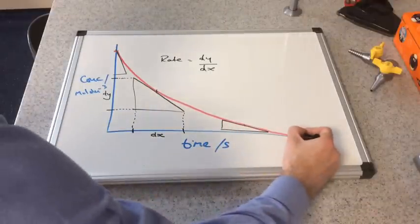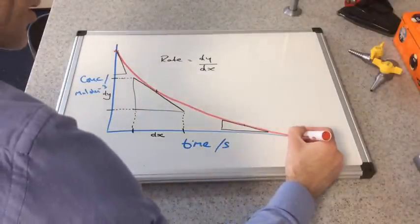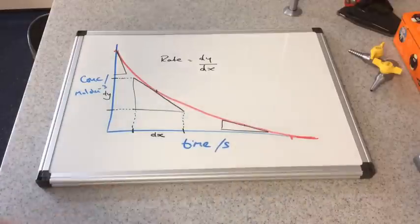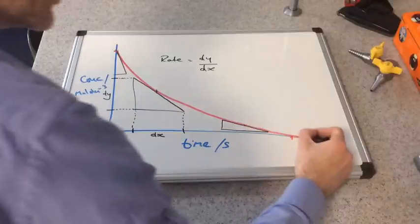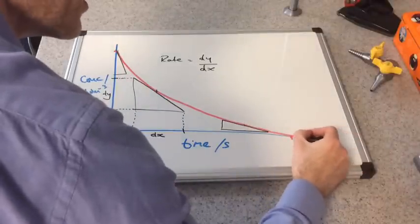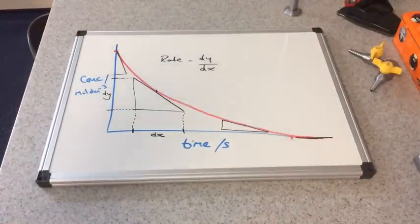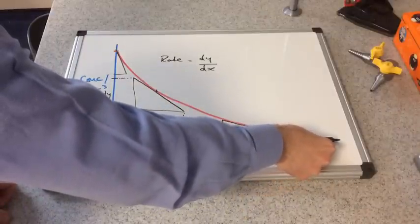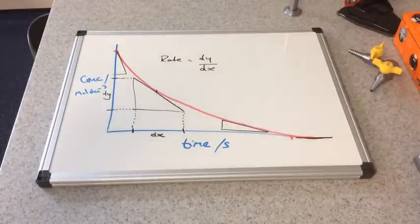Until eventually this graph, if I extend it, would just run flat along the x axis. And therefore the gradient would be totally flat. But you can see now because the line's gone flat, the gradient's zero now. The time's still ticking on, but the concentration's not changing.